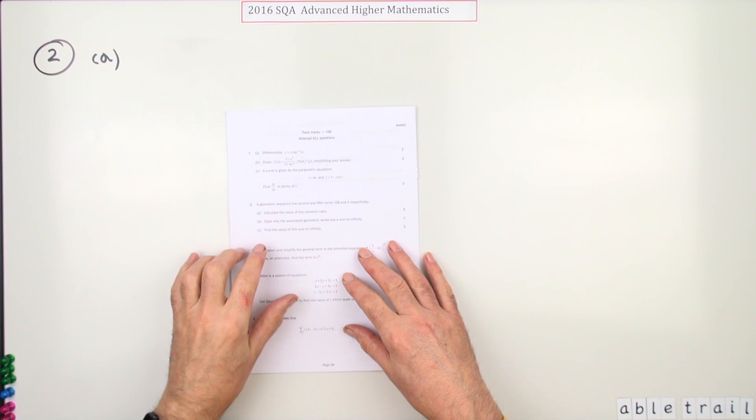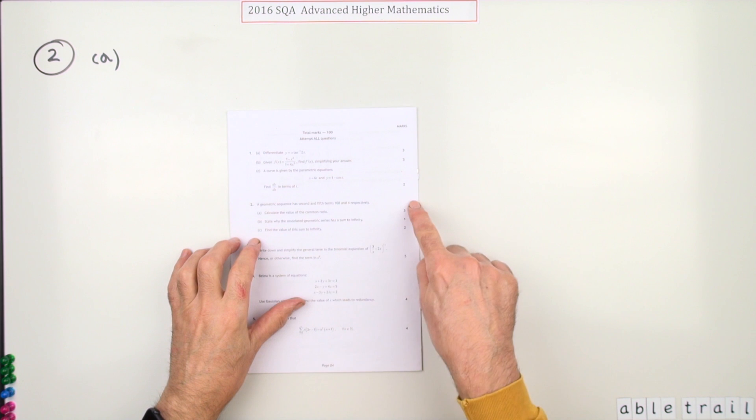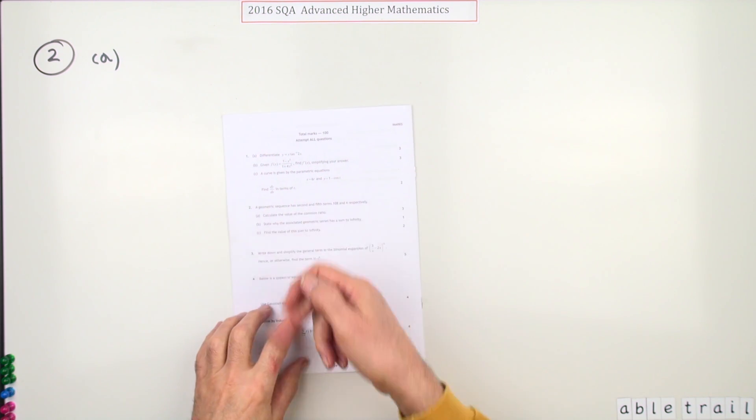Question 2 then from the 2016 Advanced Higher Maths. Here we go, 6 mark question, geometric sequence, three parts.